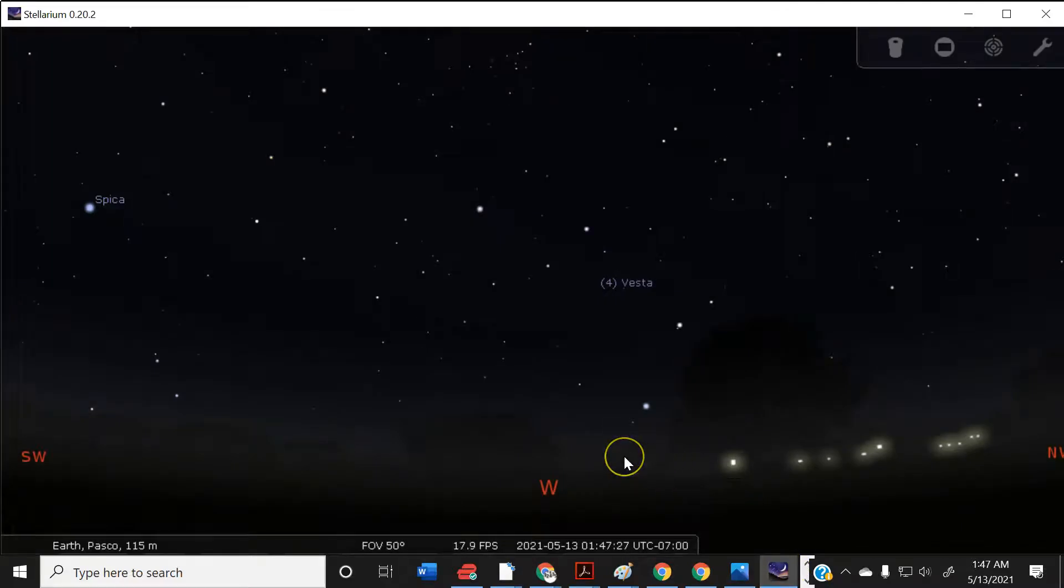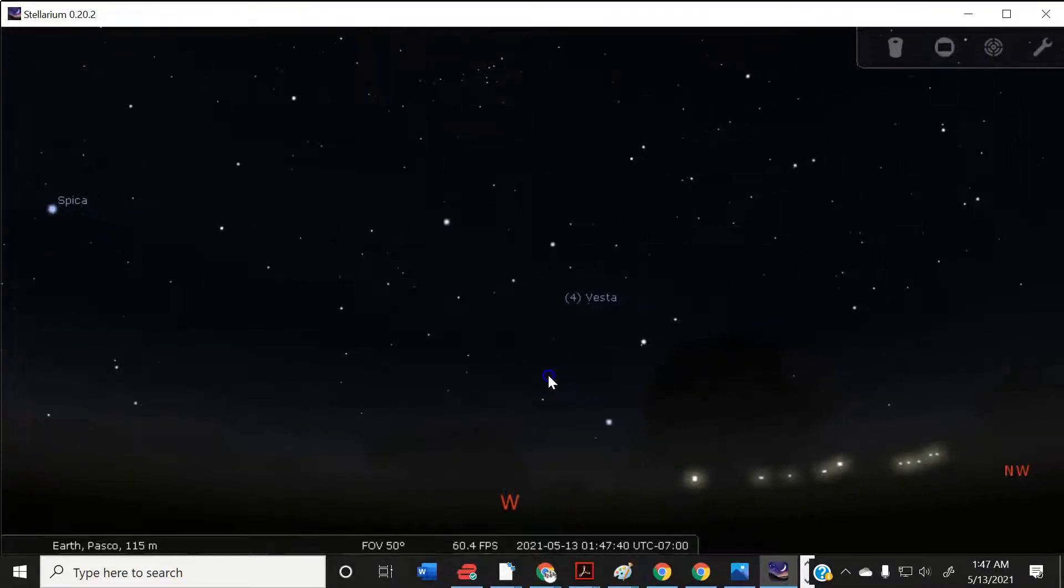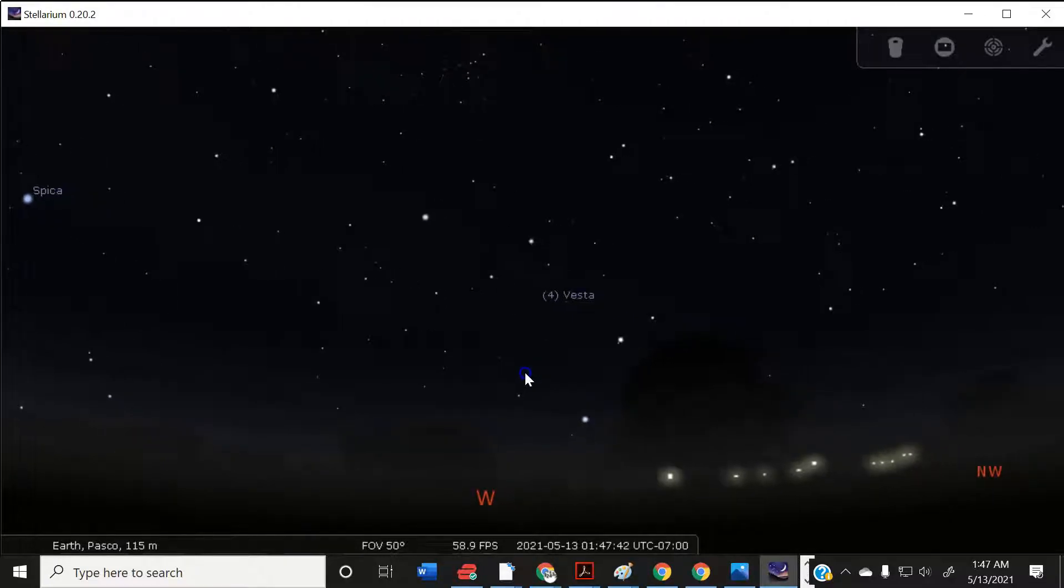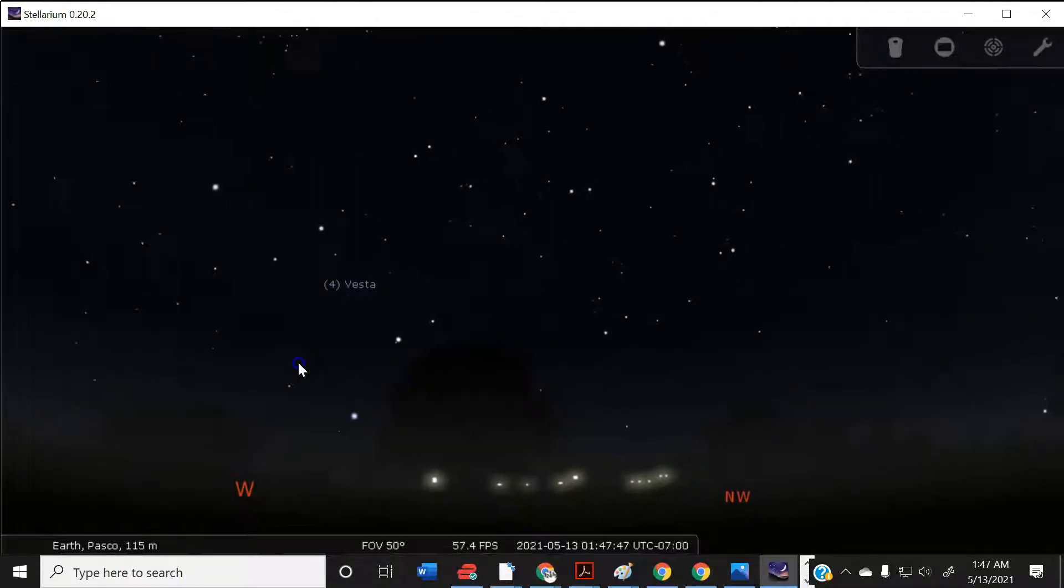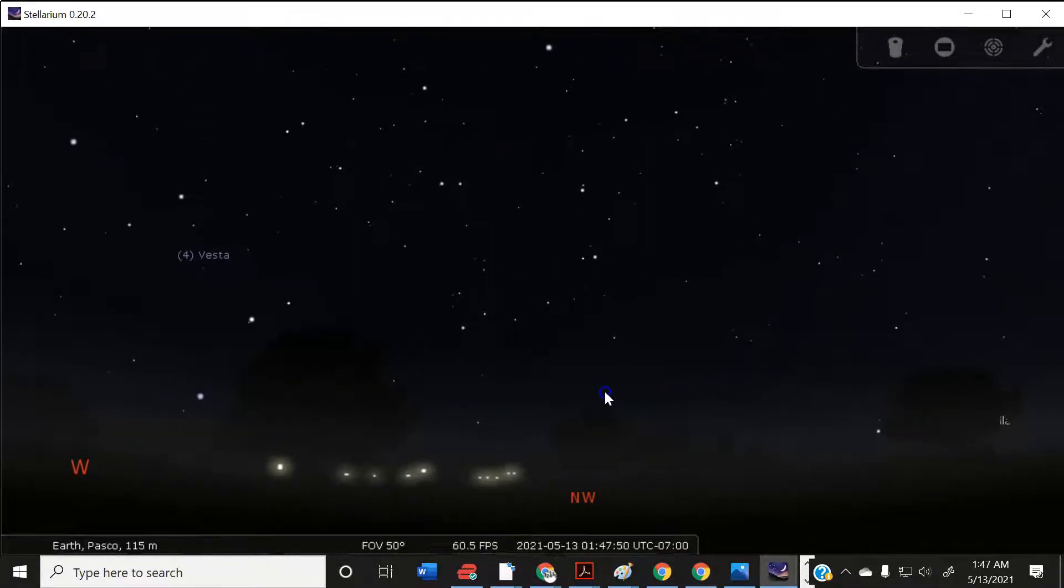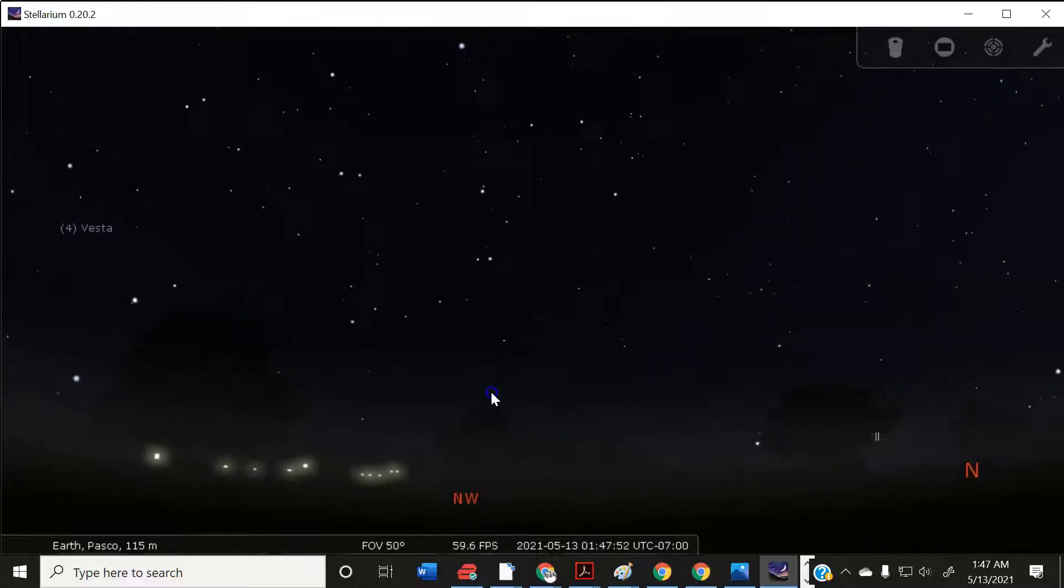If you go outside at night and look up in the sky, you don't see just black. If you went outside in Pasco and looked west, you would see dots of light in the sky. And if you turn to your right and kept looking up, you would see these dots of light.